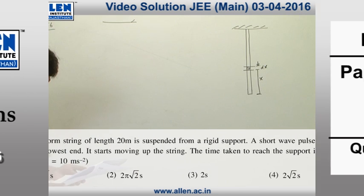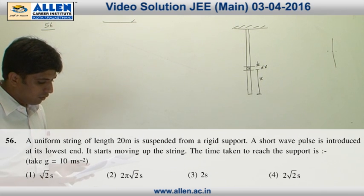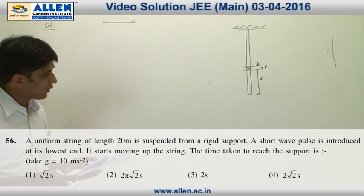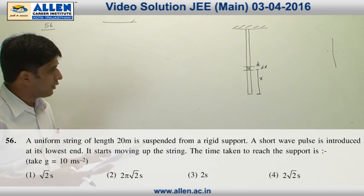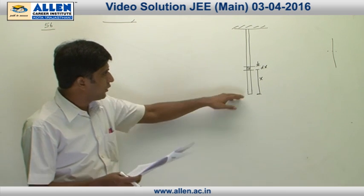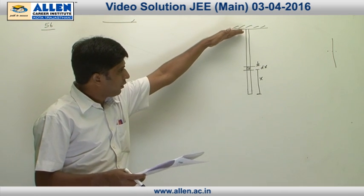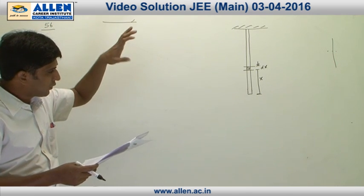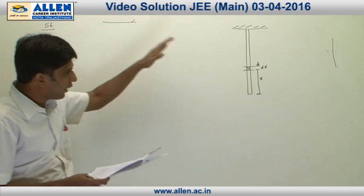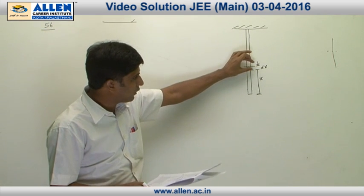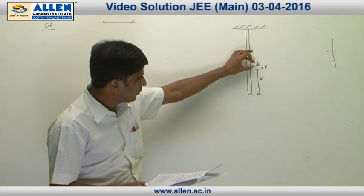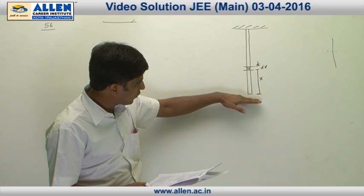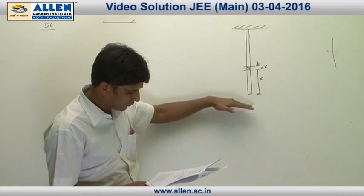In question number 56, we have been asked to calculate the time taken by the wave pulse to reach the uppermost end. Consider an element of length dx at a distance x from the lower end of the rope.